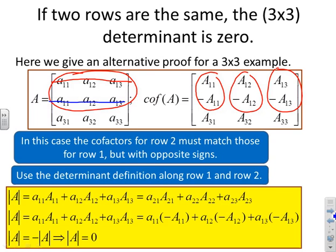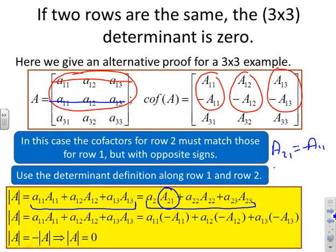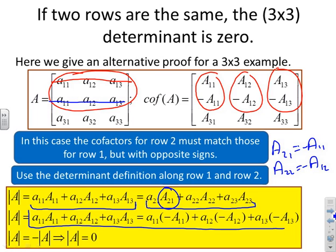Expanding along row one and then along row two, and noting that cofactor A21 equals minus cofactor A11, cofactor A22 equals minus cofactor A12, and so on, after substitution the expression states that the determinant of A equals minus the determinant of A. The only possible solution is that the determinant is zero. This proof approach extends easily to four-by-four, five-by-five, six-by-six, and so on.